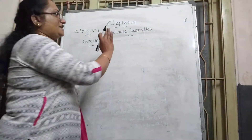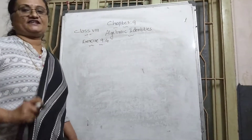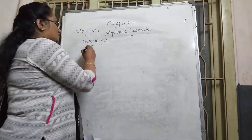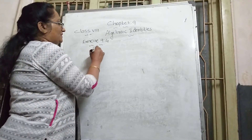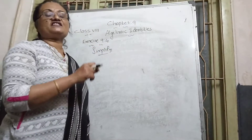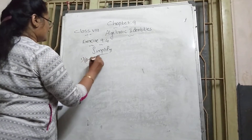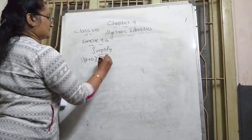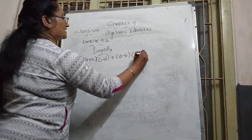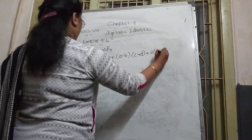Hi students, now we are going to discuss about Chapter 9, Algebraic Identities, Exercise 9.4. The first question says simplify the given expression: (a + b)(c − d) + (a − b)(c + d) + 2(ac + bd).